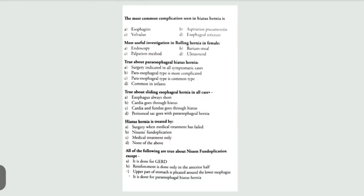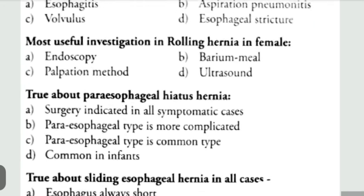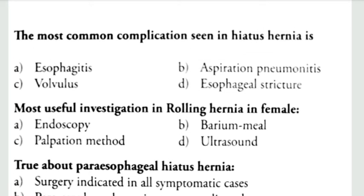Practice questions: The most common complication seen in hiatal hernia is esophagitis, caused by reflux of gastric content into the esophagus causing inflammation. Aspiration pneumonitis and esophageal strictures also occur, but they are not the most common complication.